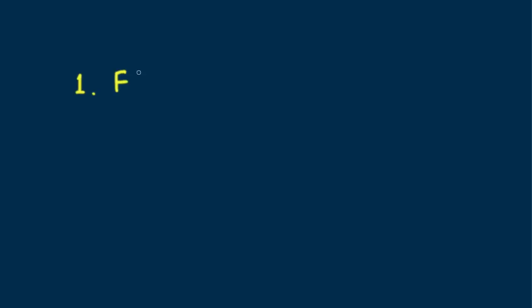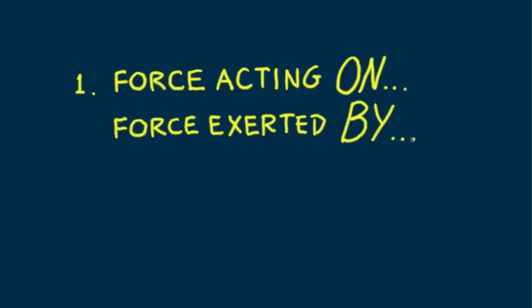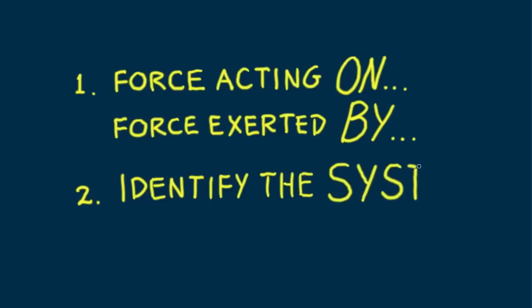To understand Newton's Third Law, there are two things you've got to do. Number one: distinguish between a force on an object and a force exerted by an object. Number two: identify the system involved.